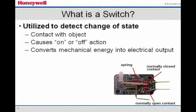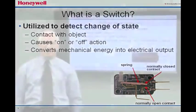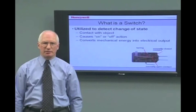What is a switch? A switch is an electromechanical device used in contact applications where the switch is actuated by touching an object or target. The actuation of the switch typically causes an on or off action. Each switch contains a spring and a set of contacts that convert mechanical energy applied to an actuator into an electrical output.